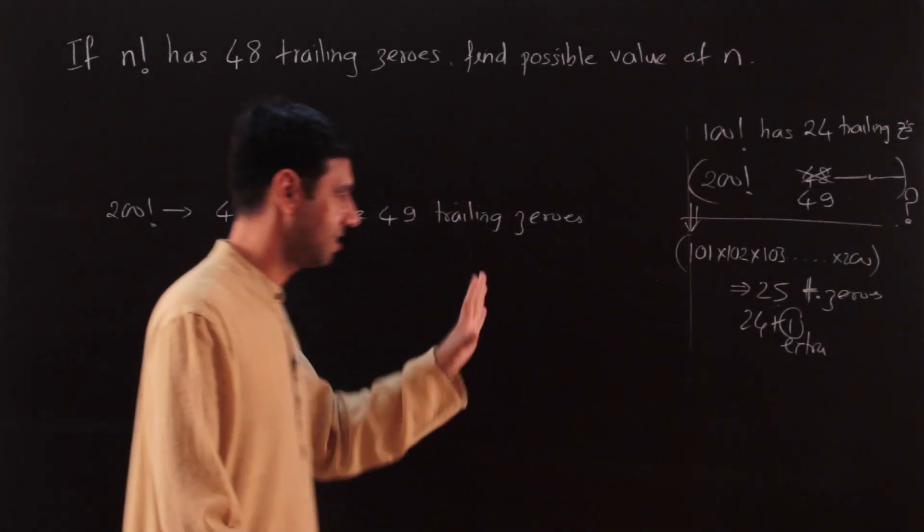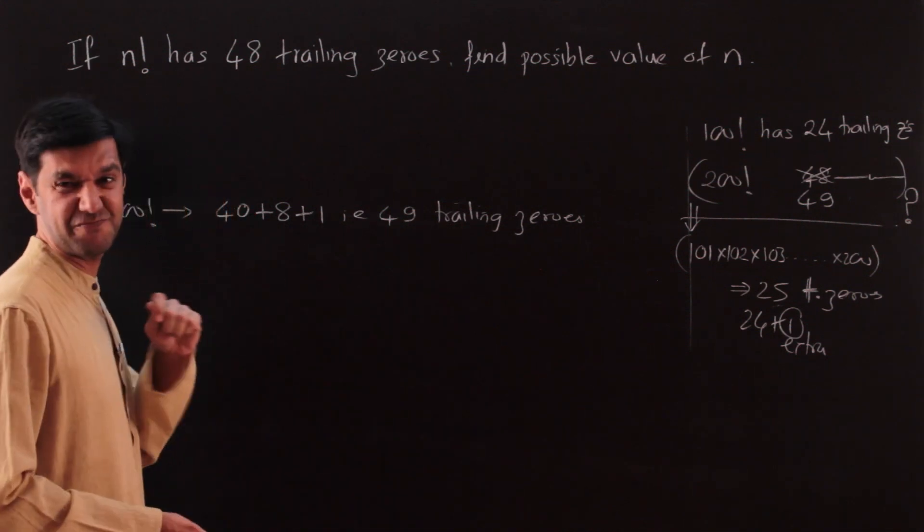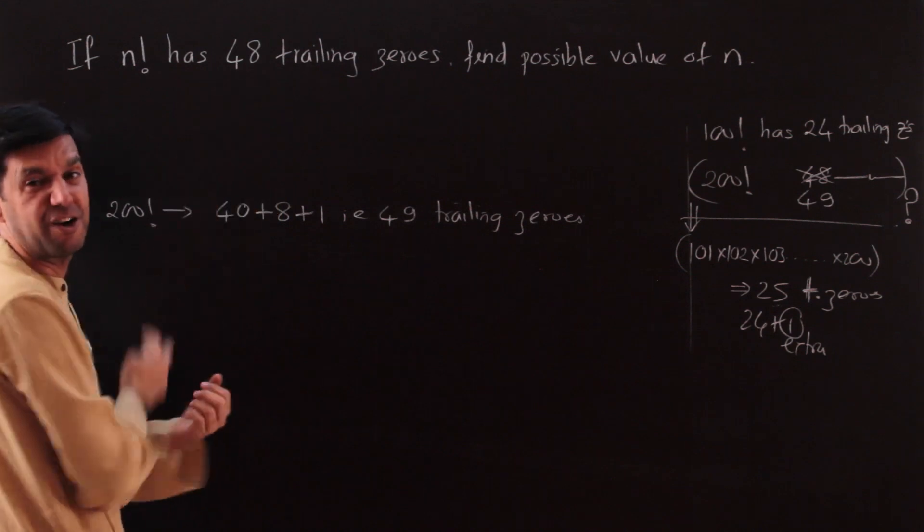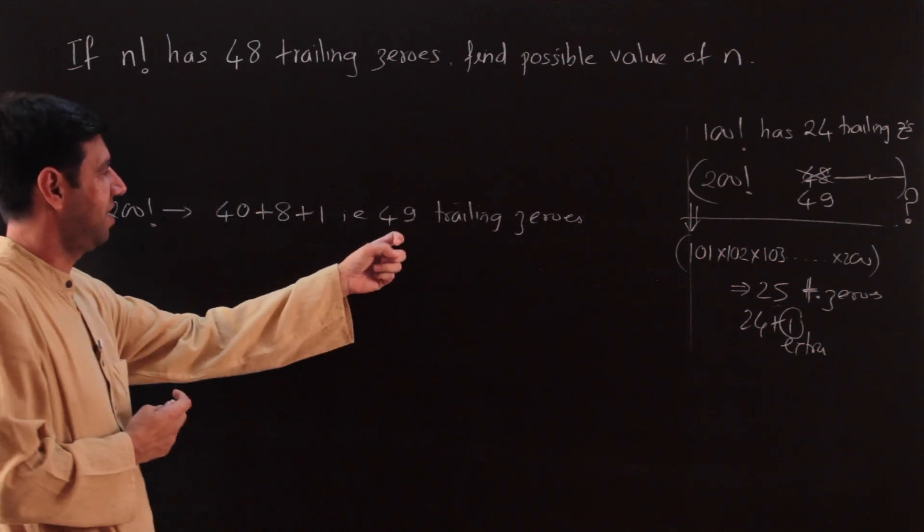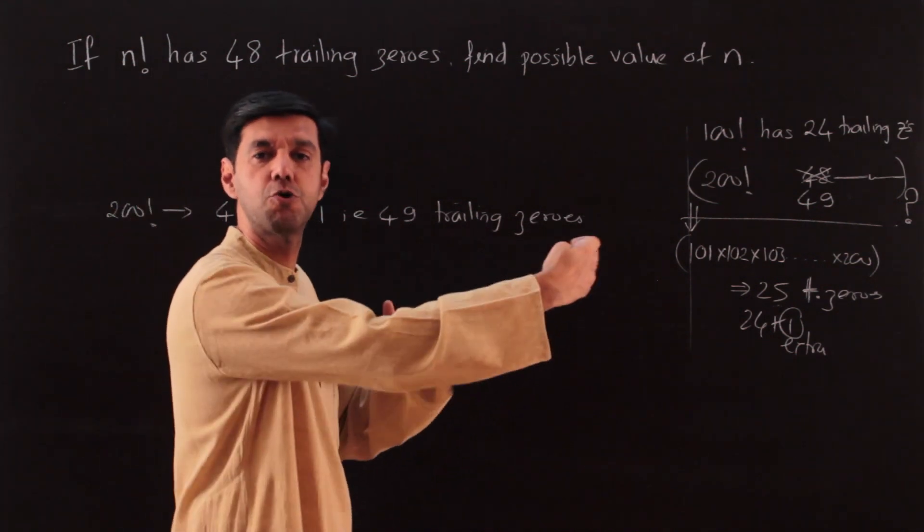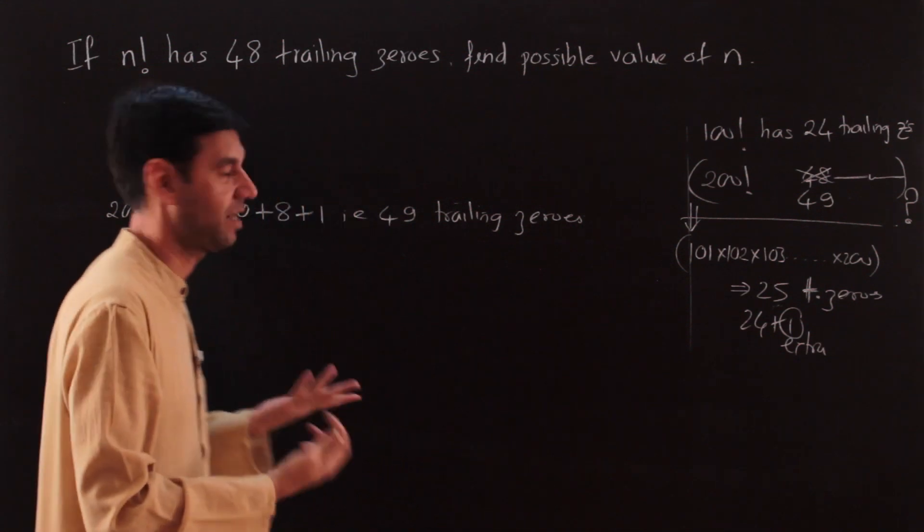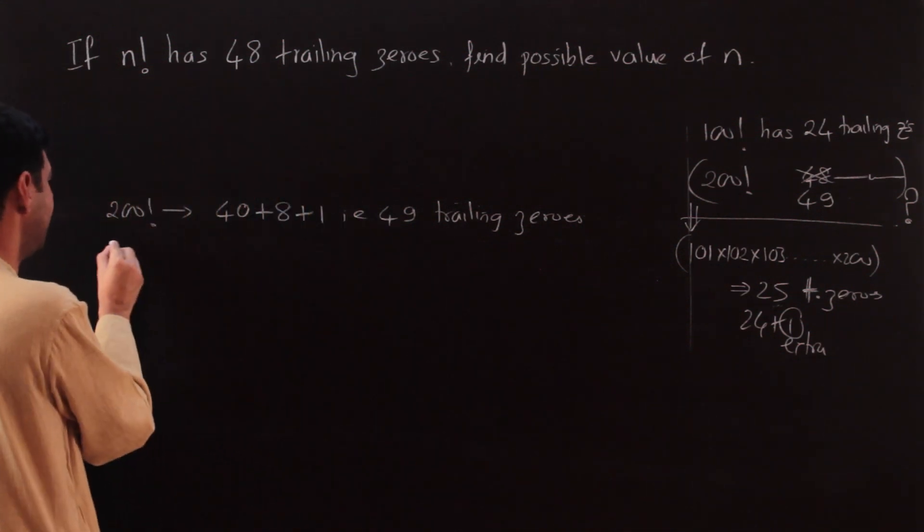Anyway, now that is for me - I like to be perfect in understanding what's going on, but do that work. Let's come back to our question. But I needed 48 trailing zeros. I landed with 49, so let me go a little less. The higher up I go from 200, the more zeros I will be getting. So I will come down to a little lesser number.